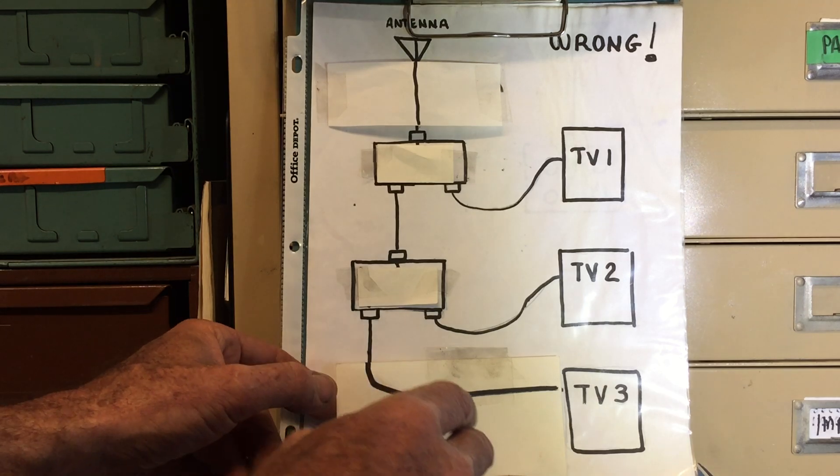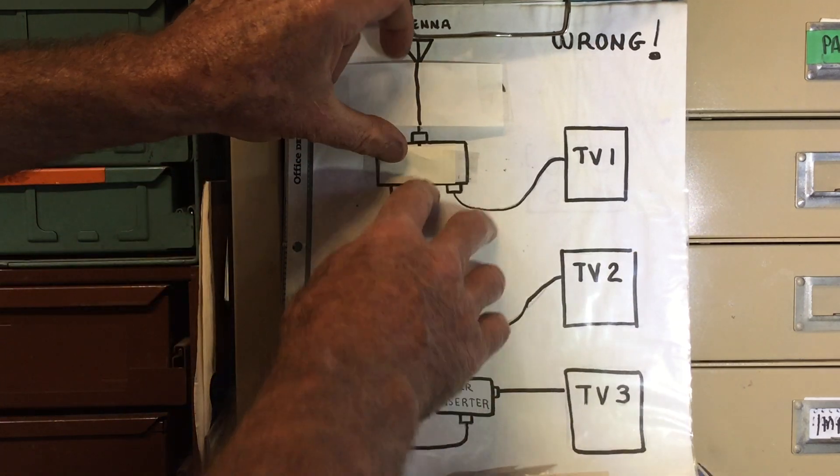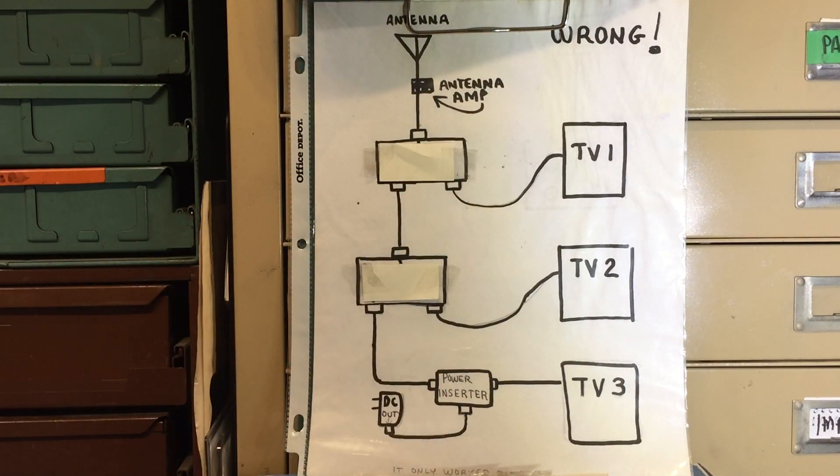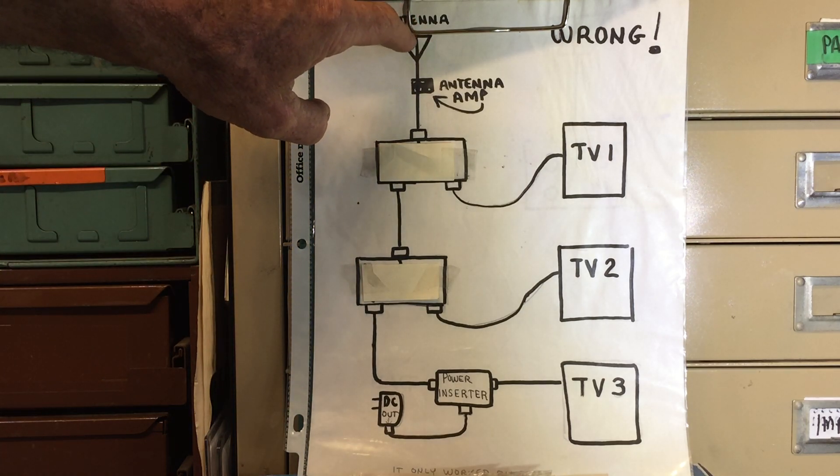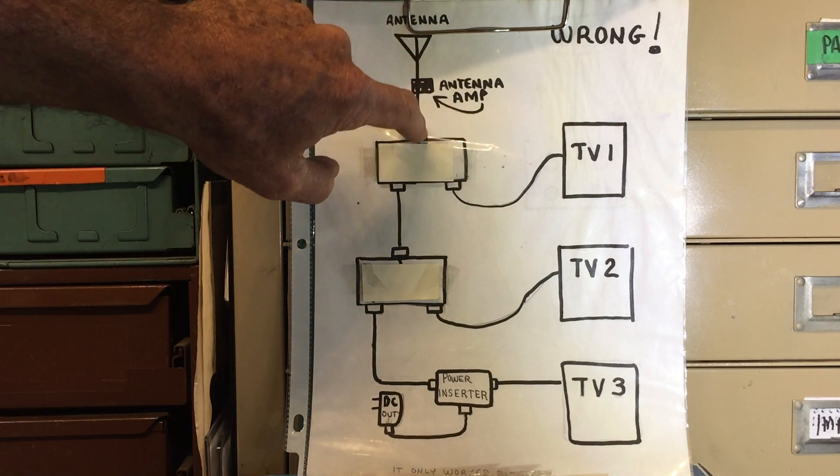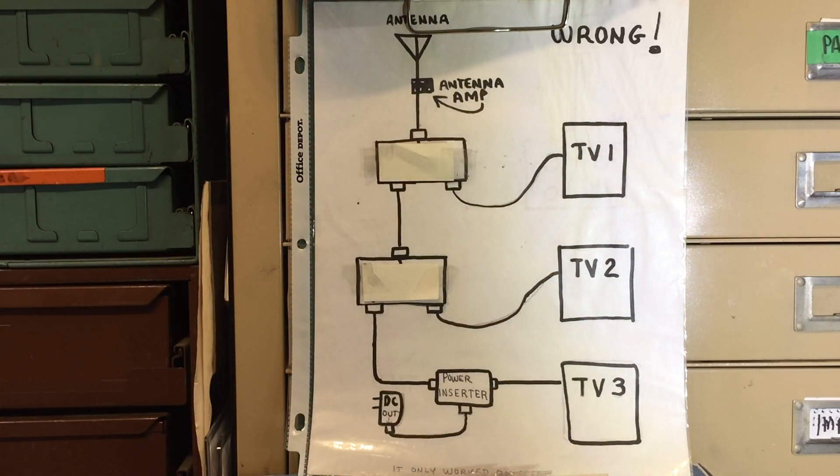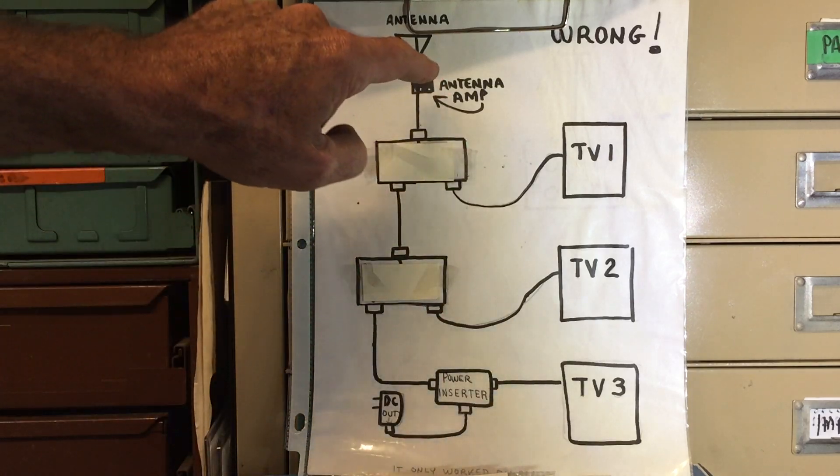So what I did is I went ahead and bought myself a two-piece antenna amplifier. For those of you that are not familiar with the two-piece antenna amplifiers, they're really great amplifiers because what they do is they amplify the antenna signal right underneath the antenna and send it back down this way to the televisions.